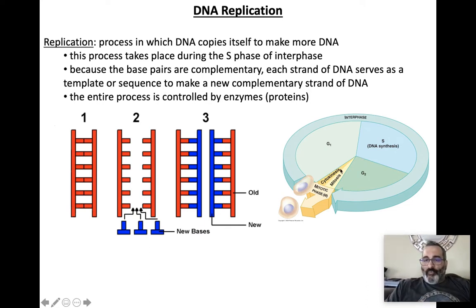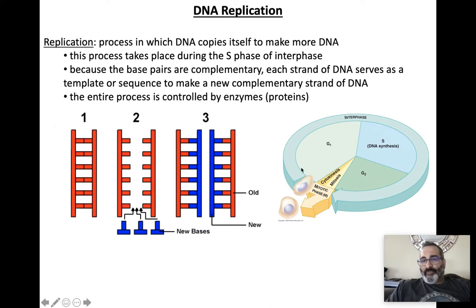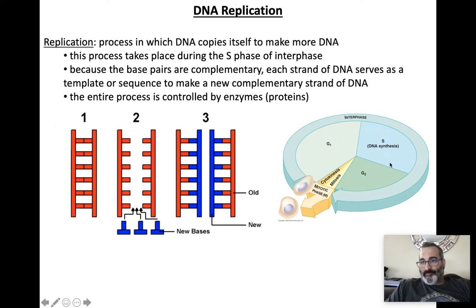In an earlier unit, we may have discussed the cell cycle — that's like the life of a cell. A cell goes through a life cycle: G1, where it's growing and getting ready to divide. The S portion is called synthesis — that's where DNA copies itself. After copying, it grows a little more in G2 to get ready for division, and then M — mitosis and cytokinesis.